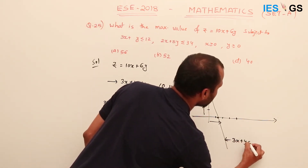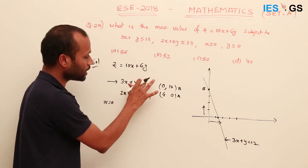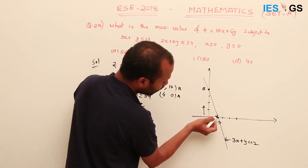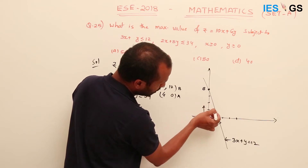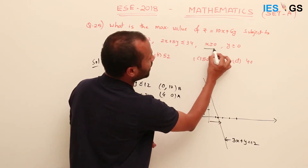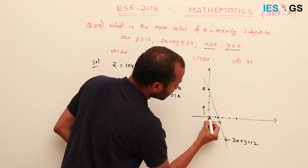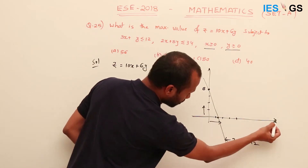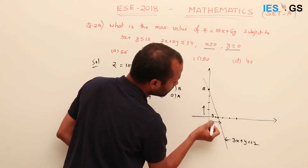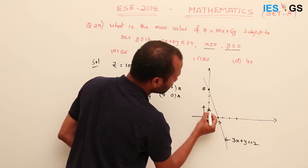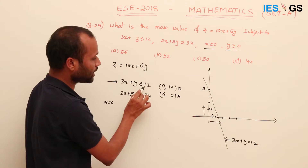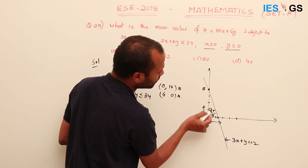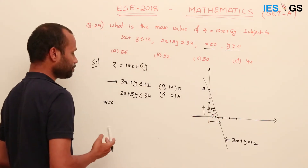This is the line 3x + y = 12. Since the condition is 3x + y ≤ 12, our x and y shall be bounded below this line. It is also bounded by x ≥ 0 — meaning to the right of the y-axis — and y ≥ 0 — meaning above the x-axis. So the region of interest is bounded by these three constraints.